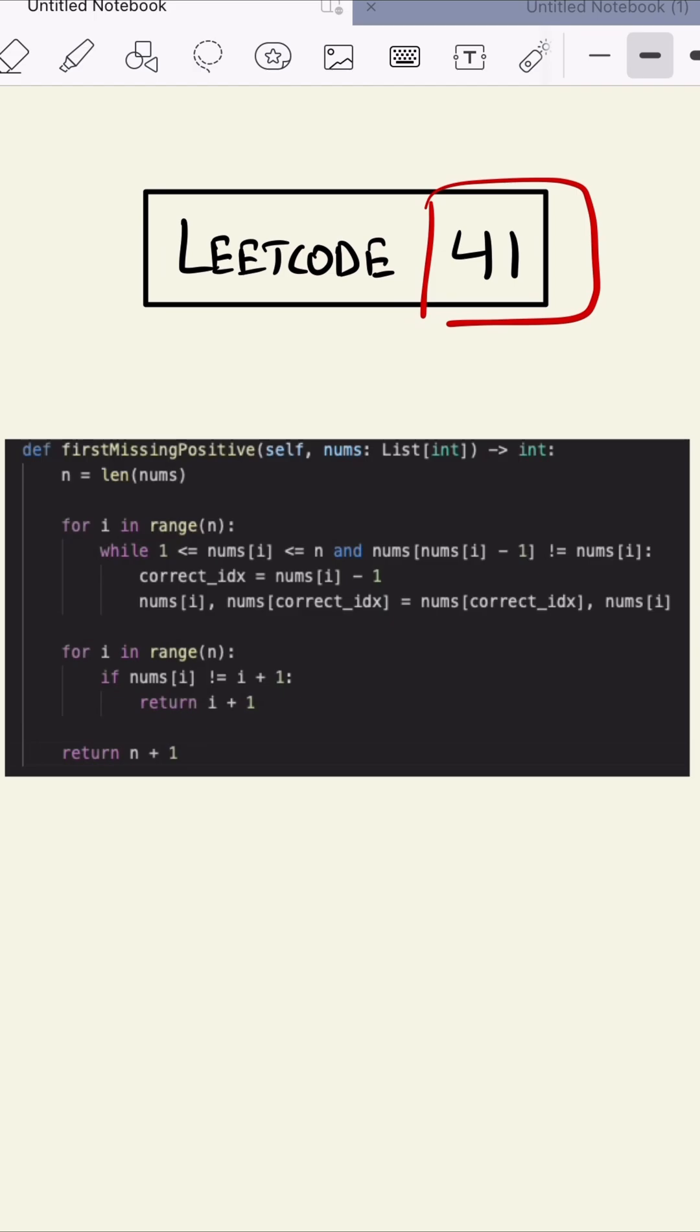As you can see, we are changing the index of all the numbers which are not at their correct index. And if all the indices are at their correct position, we are returning the list plus one element.